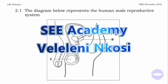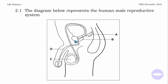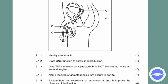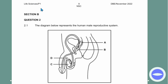Hello guys, welcome to our channel. My name is Vileling Ngosi. Today I will be working on a previous question paper of Life Sciences Grade 12. This question paper is for Life Sciences Paper 1 from the Department of Basic Education, written in November 2022. The question is based on the male reproductive system, which falls under human reproduction. We will be looking at Section B, Question 2.